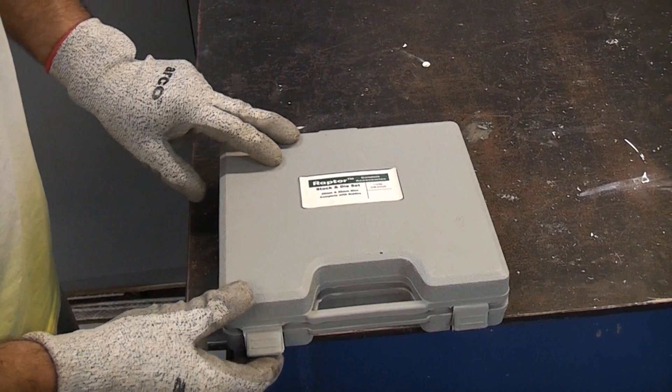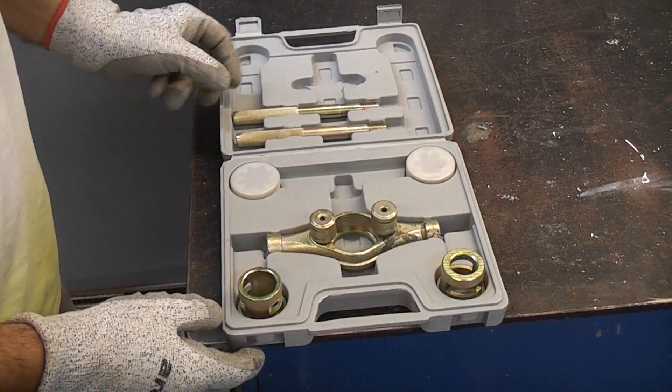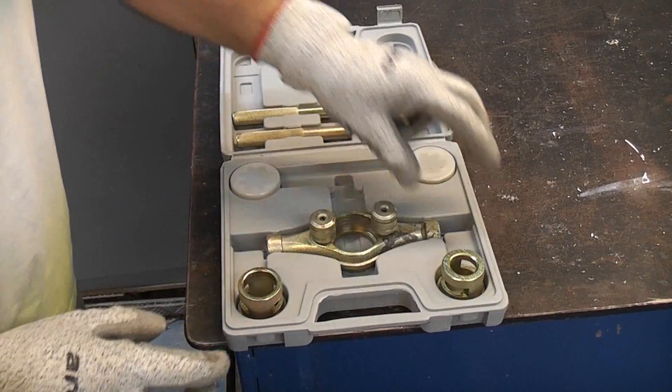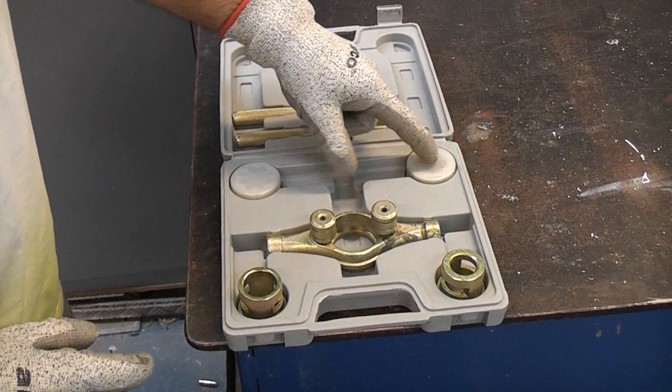If you buy a stock and die set it will look something like this. So they are the guides, that's a 25mm and a 20mm, and you've also got the 25mm and 20mm dies.